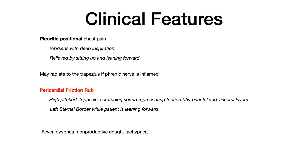Other symptoms include low-grade fever, dyspnea, nonproductive cough, and tachypnea — some nonspecific, more generalized features that will be baked into the vignette. But the big things are pleuritic and positional chest pain and the pericardial friction rub. If you see those things, stop — select pericarditis.